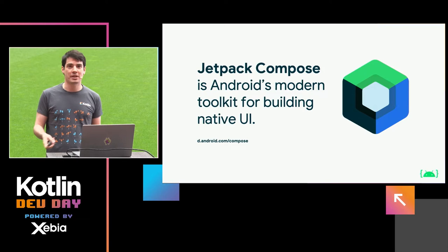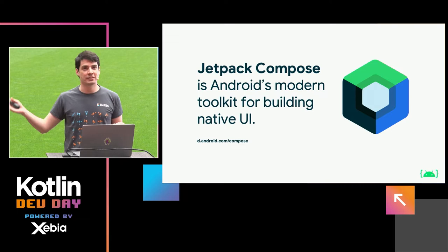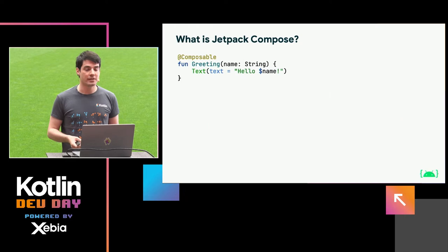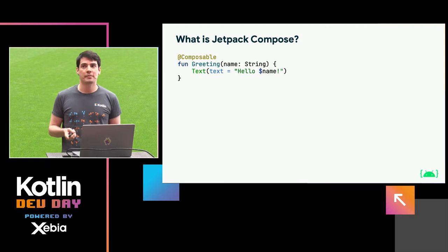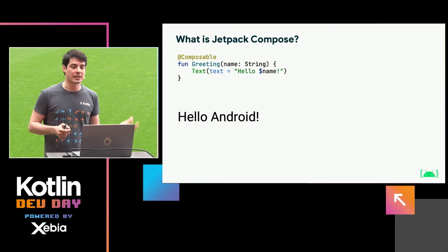We're not going to actually learn what Compose is in detail. What you need to know is that it replaced an old view system from more than a decade ago when Android first started. It makes things a lot more flexible and is just a much better fit for modern application development. Here's some code you'll see if you create a brand new Jetpack Compose project in Android Studio — a Kotlin function annotated with composable that takes a name as a parameter and displays it on the UI.